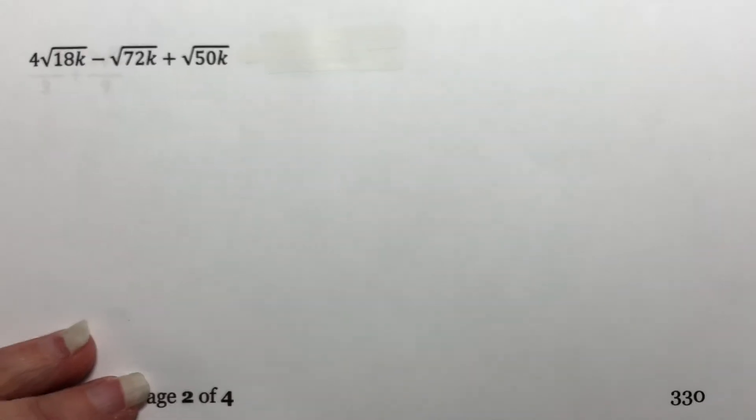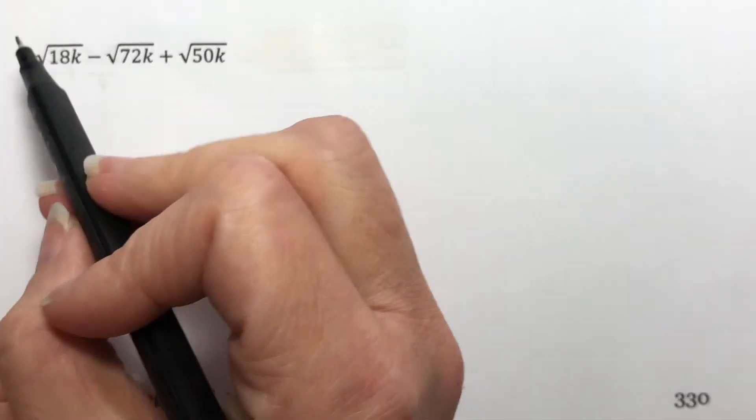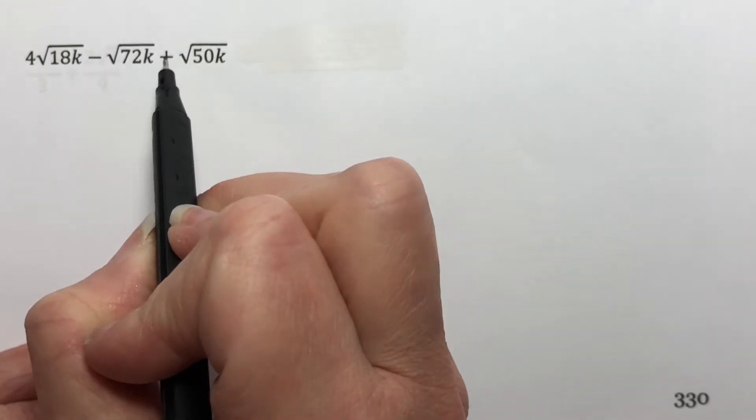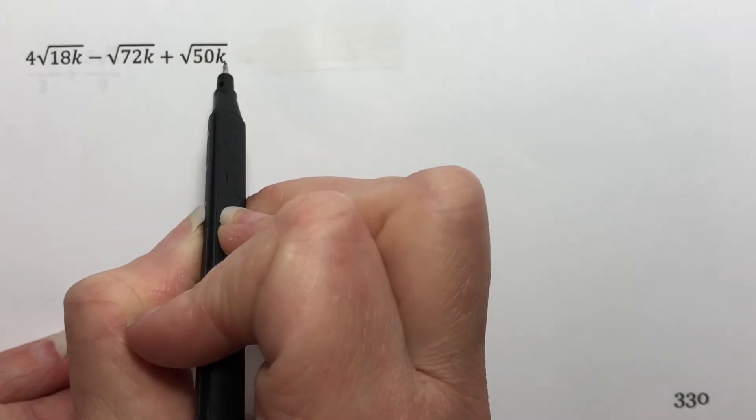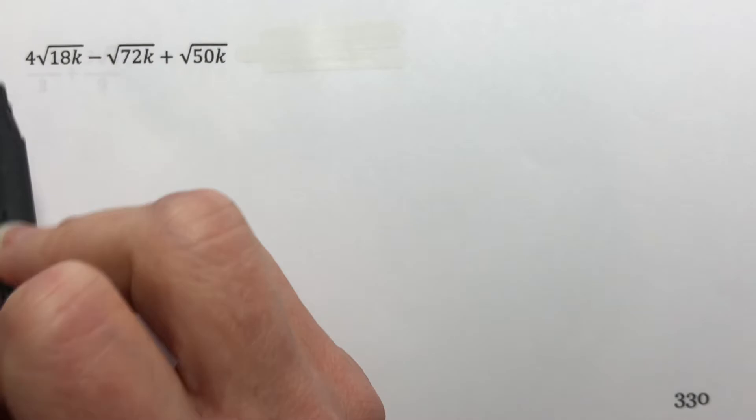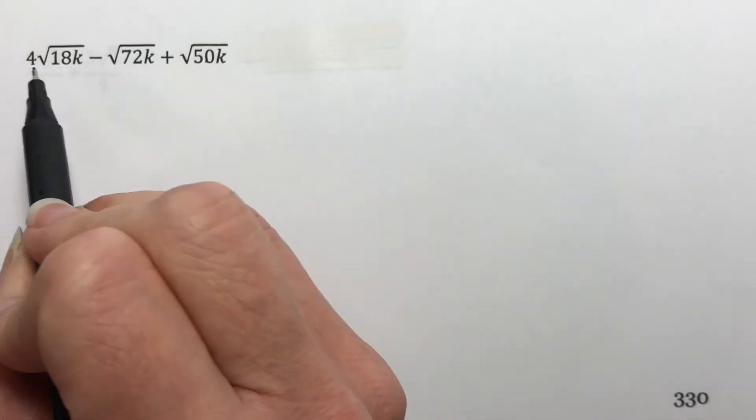This is part two of section 8.4. We want to combine four times the square root of 18k minus the square root of 72k plus the square root of 50k. Now we need to simplify this as much as possible no matter what, so let's talk about simplifying these.